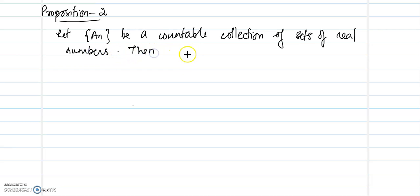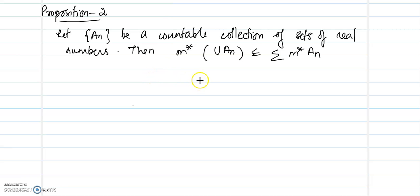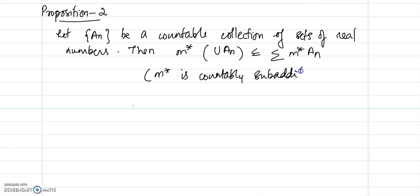So, Proposition 2 states that M* of the union of Aₙ will be less than or equal to the summation of M*(Aₙ). So, the outer measure M* will be countably subadditive. We are taking the union of Aₙ, and since the collection is countable over the real numbers, M*(∪Aₙ) ≤ Σ M*(Aₙ).